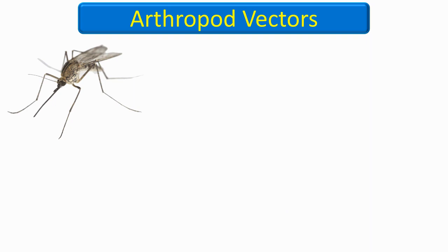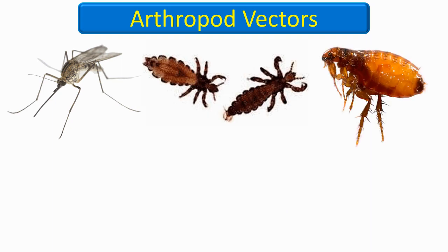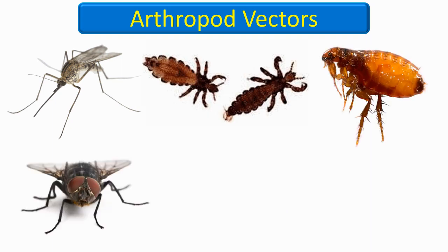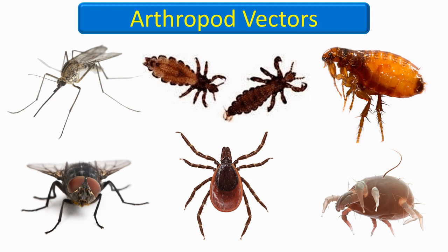The vectors for human diseases are mostly arthropods, which include mosquitoes, lice, fleas, flies, ticks, and mites. Rarely, mammals can also act as vectors. An example is the rabies virus, which is transmitted by the bite of a mammal. You won't find many other examples of other species acting as disease vectors.